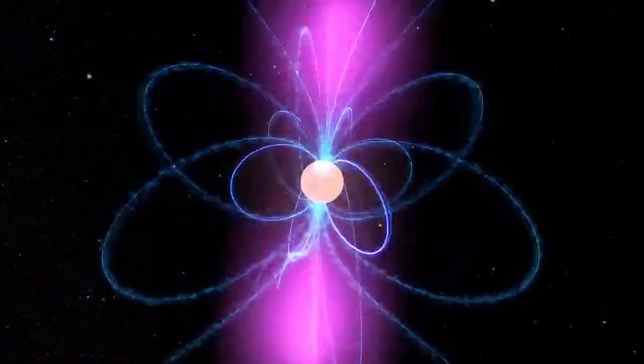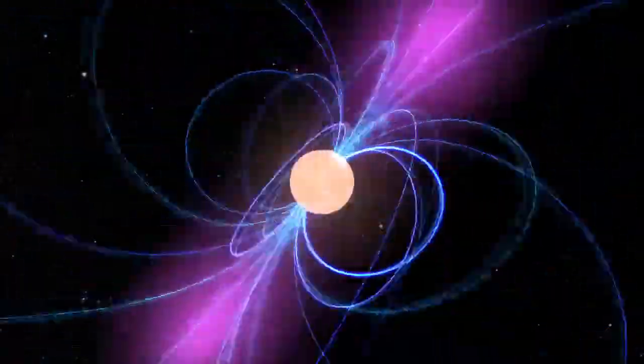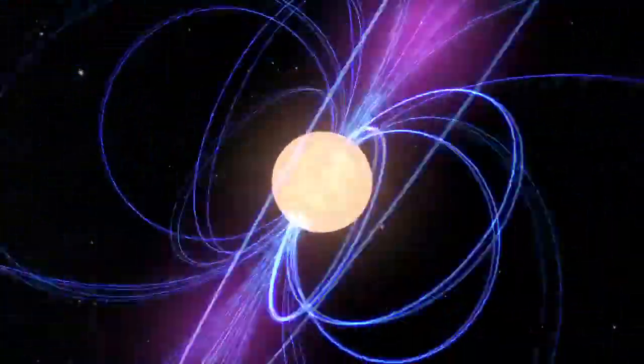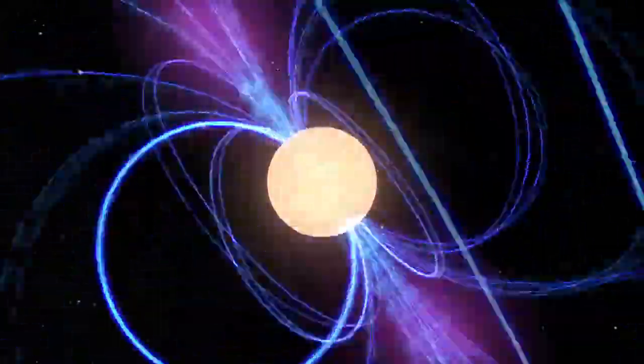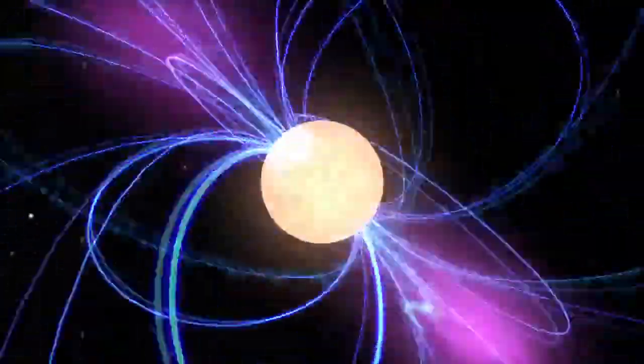Neutron stars spin between 7 and 40,000 times a minute and form with incredibly strong magnetic fields. Rapid spin and intense magnetic fields drive powerful beams of electromagnetic radiation, including gamma rays.